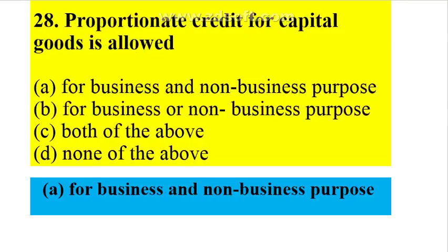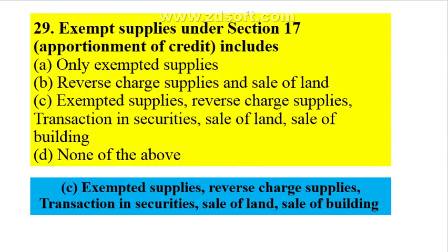Proportionate credit for capital goods is allowed for both business and non-business purposes. Under section 17, apportionment of credit includes exempt supplies, reverse charge supplies, transaction in securities, sale of land, and sale of building.